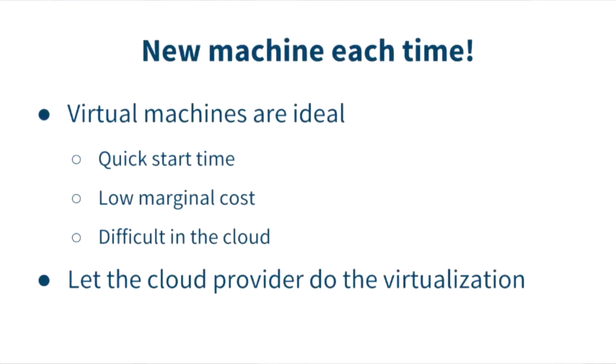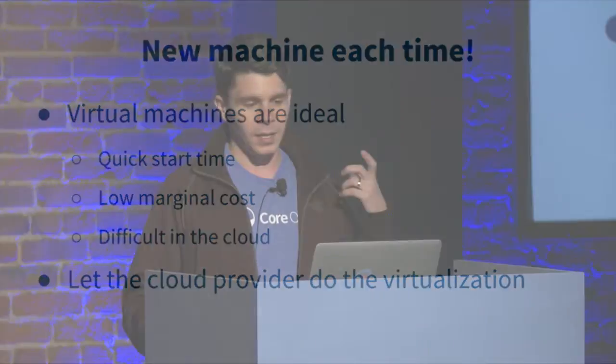So basically, we're going to use a new machine each time. Virtual machines are ideal for this kind of workload because they have a quick start time and very low marginal cost. Unfortunately, it's not really doable on any of the already-virtualized infrastructure as a service providers — this is possible with KVM hardware virtualization extensions, but it's not in production in any cloud providers. So we said fine, we're just going to let the cloud provider do all the virtualization and bring up a new machine each time.